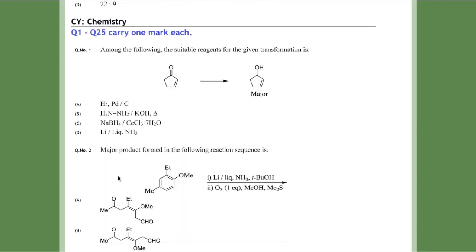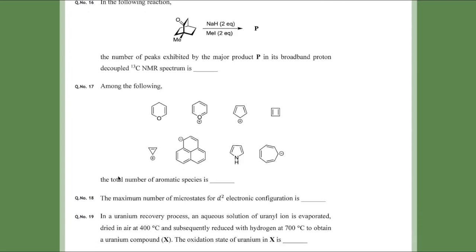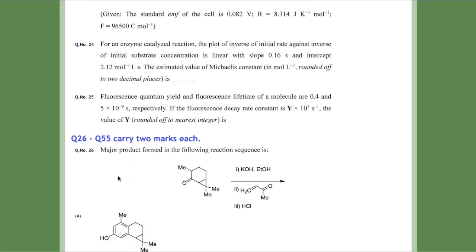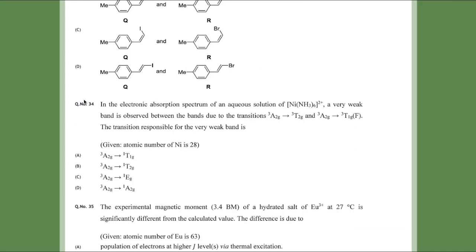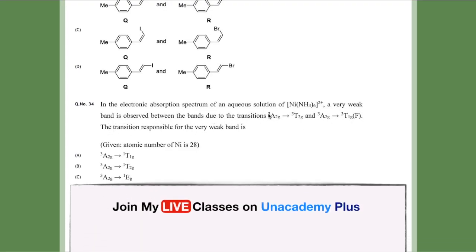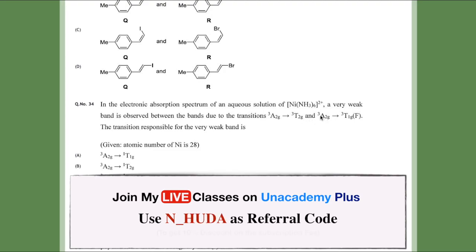Now talking about another question that some of you asked about in the comment section of the previous video. Question 34 says: the electronic absorption spectra of an aqueous solution of Ni(NH3)6²⁺ shows a weak band observed between the bands due to transitions 3A2g→3T2g and 3A2g→3T1g(F). What transition is responsible for the weak band?